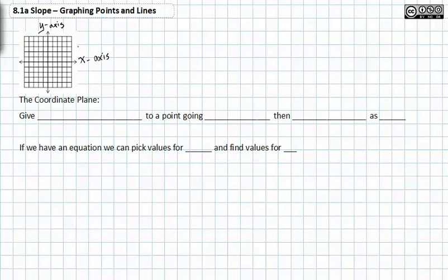Where the two axes intersect each other, this is called the origin. And it's also the coordinate point (0, 0).